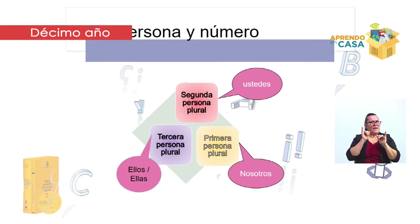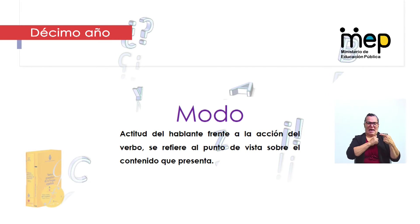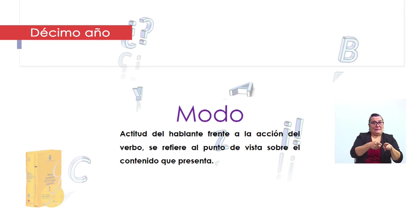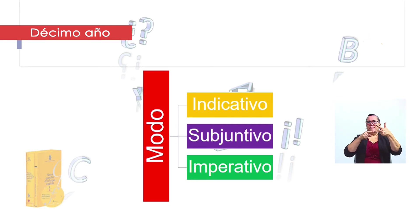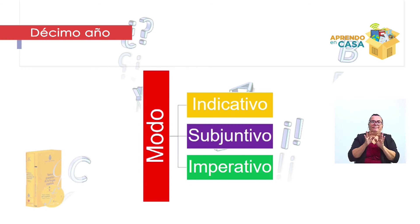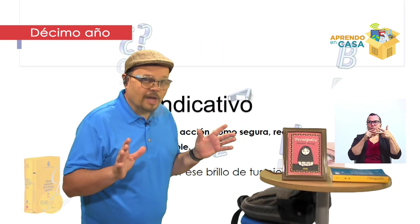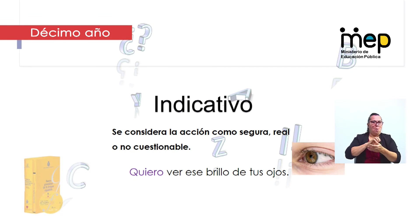Continuemos. Vamos a hablar del modo. ¿Qué es el modo? El modo es la actitud frente a la acción del verbo y se refiere al punto de vista de lo que se está presentando. ¿Cuántos modos hay? Tenemos el modo subjuntivo, el modo indicativo y el modo imperativo. Estos modos me van a decir cierta información del hablante frente a la oración. En primer lugar, el modo indicativo considera que la acción es algo seguro, no cuestionable; me va a decir un hecho real.